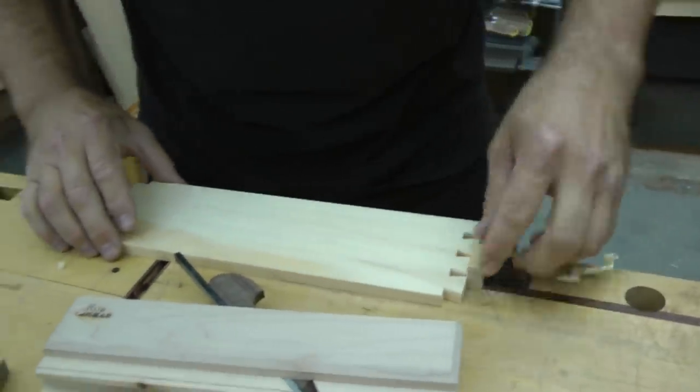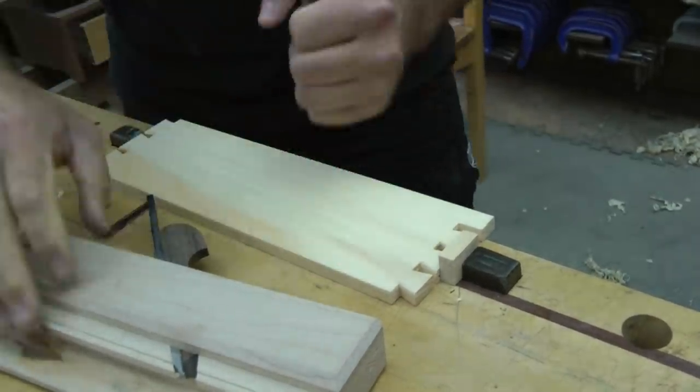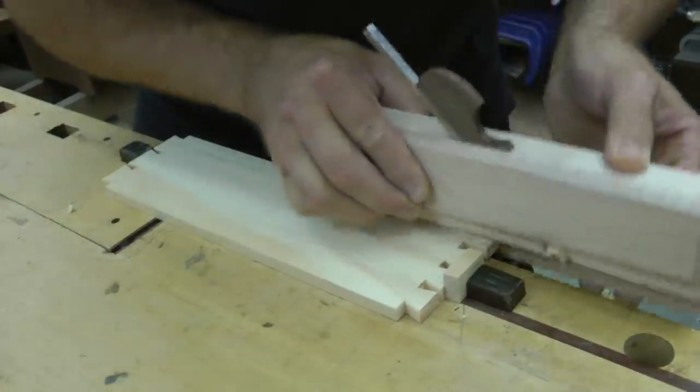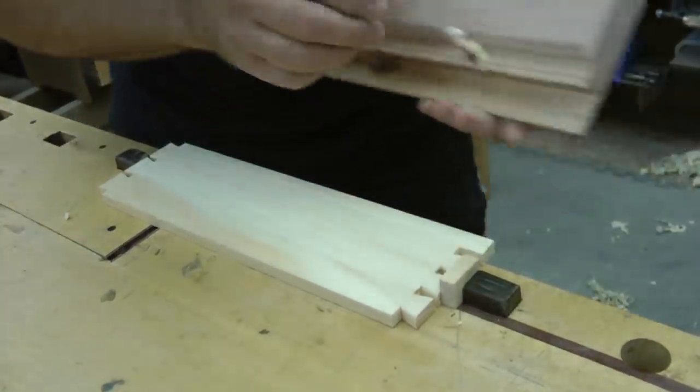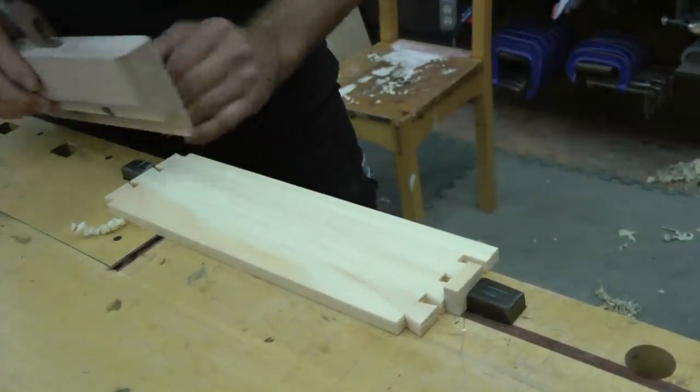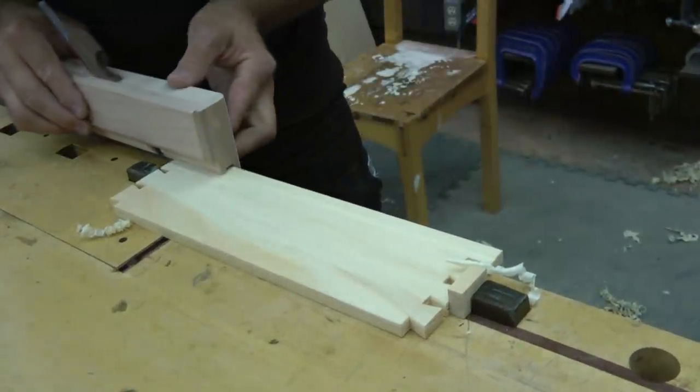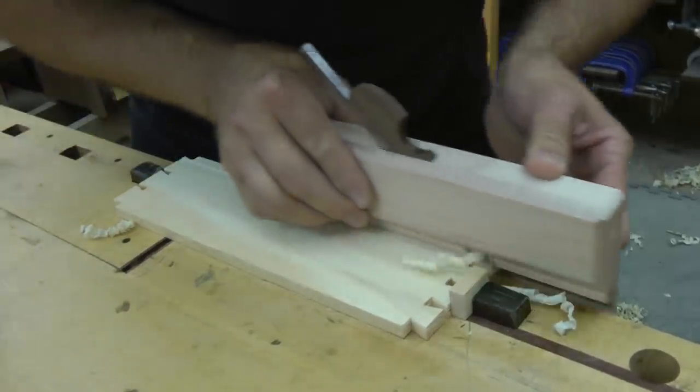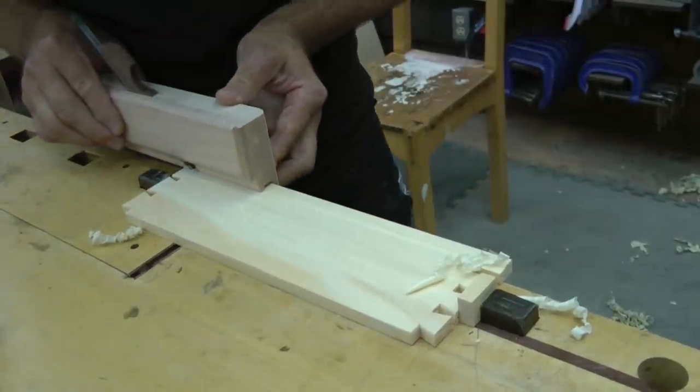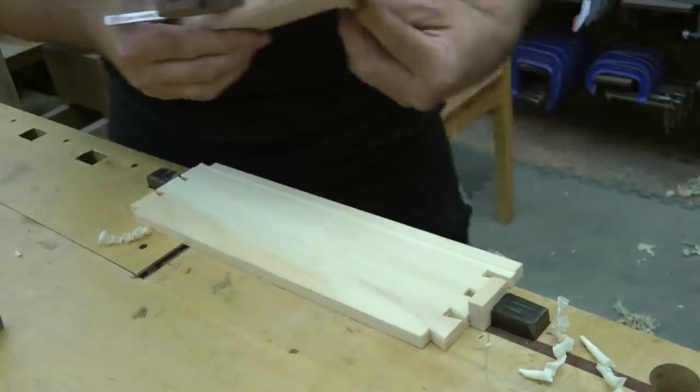I'm not making it too heavy of a cut because just in case the grain really changes direction on me, if I take nice light passes, I'll be okay. Trying to hog it out in heavy cuts, although it wouldn't take me as many strokes, I run the risk of tearing something out. So this is working fine. Set that one aside, go ahead and start on the real ones. Now this is the one that I already had started on so that when we laid out our dovetail, we made sure they were in the right spot. You remember we went in and just did a light pass.